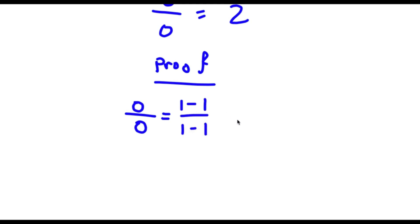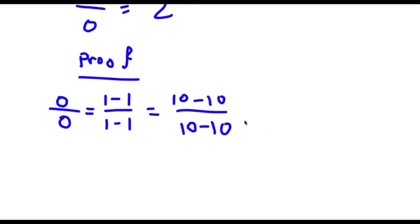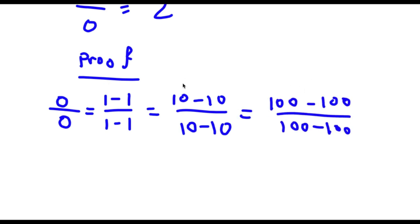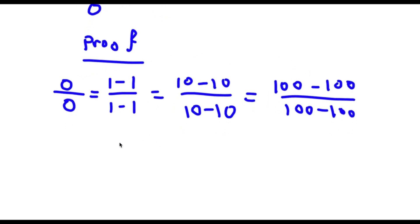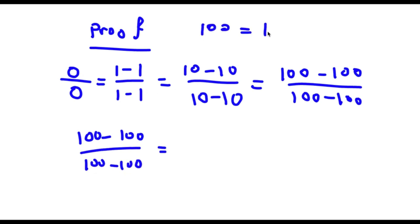Now this is the same thing as 10 minus 10 — anything minus itself is going to equal 0 — so this is the same thing as 10 minus 10 over 10 minus 10. And now this is the same thing as 100 minus 100 over 100 minus 100. So now 100 minus 100 over 100 minus 100, well 100 is equal to 10 squared.